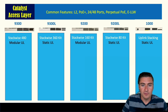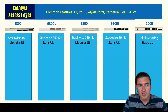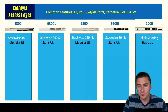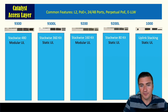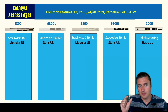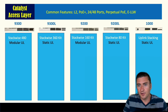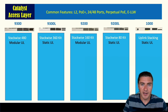Regarding uplinks: the 9300 and 9200 can be purchased with modular uplinks, which is a great feature. You might start with 10-gig uplinks today, but you can swap that module out for 25-gig or 40-gig later. The 9300L, 9200L, and Catalyst 1000 have fixed uplinks, so you need to buy the variation you'll need now and in the future.